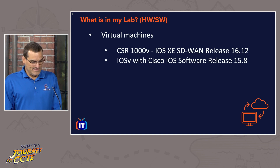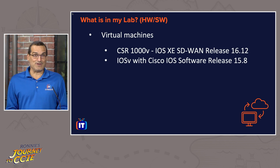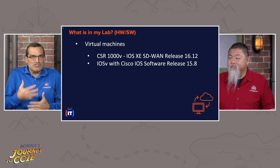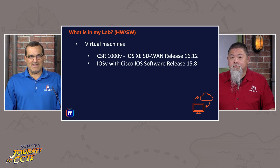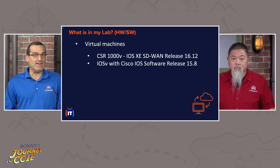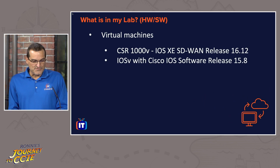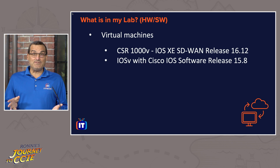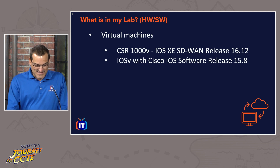That router, by the way, I think is inside of CML. So what a great way to get initially familiar with the iOS XE operating system and that device. You could also spin one up in AWS and use an eval copy. The next thing is the iOS V running 15.8. I do believe that's the exact CML code that's running. So you've got a head start there.